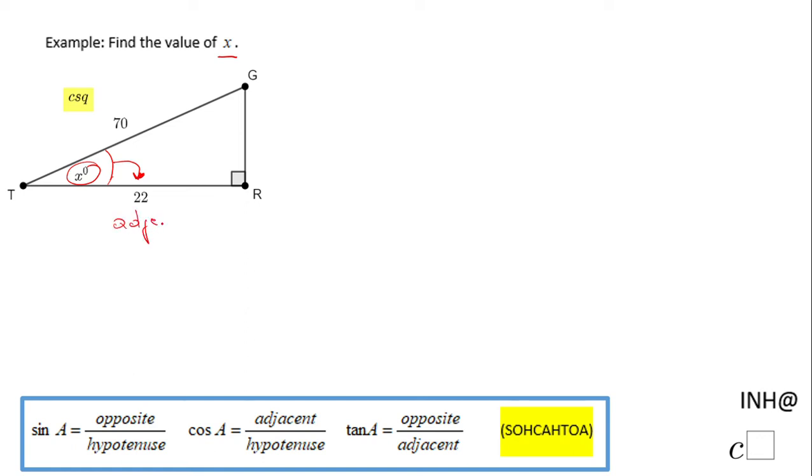In fact, we know this side the hypotenuse, right? The longer side of the triangle is on the opposite side of the right angle.